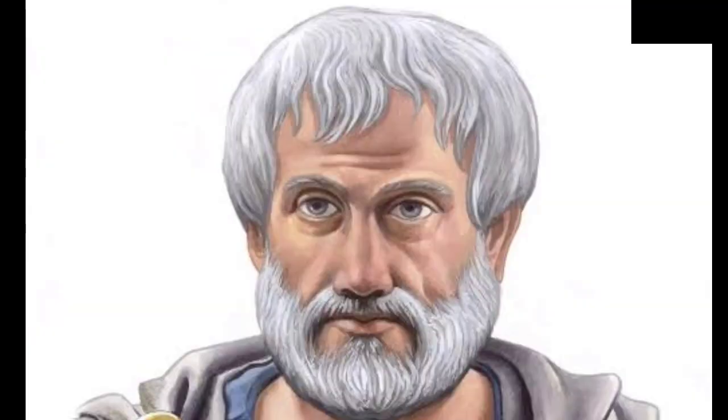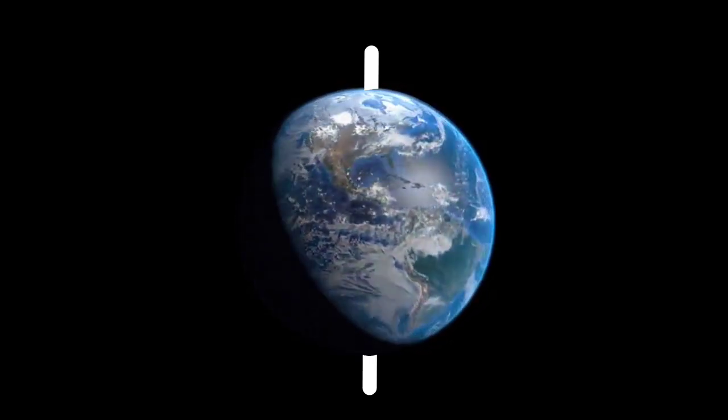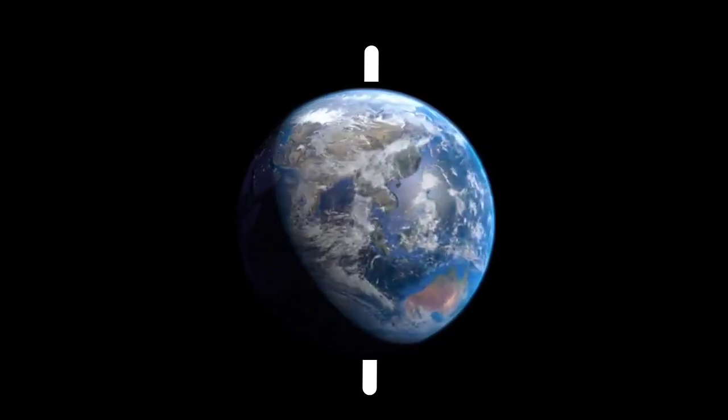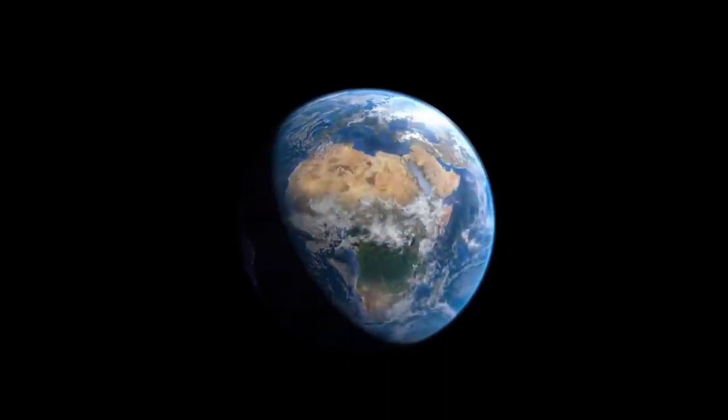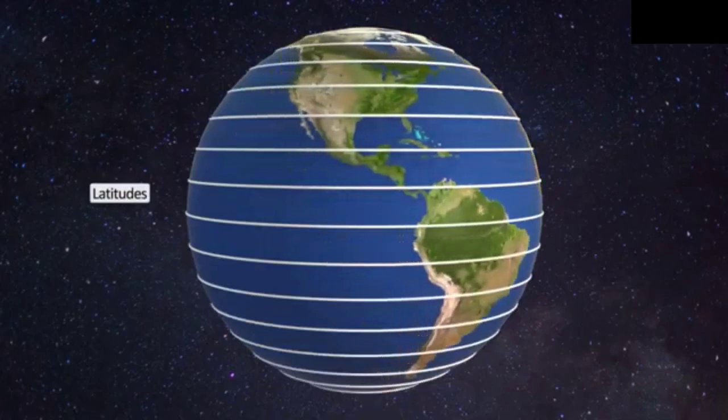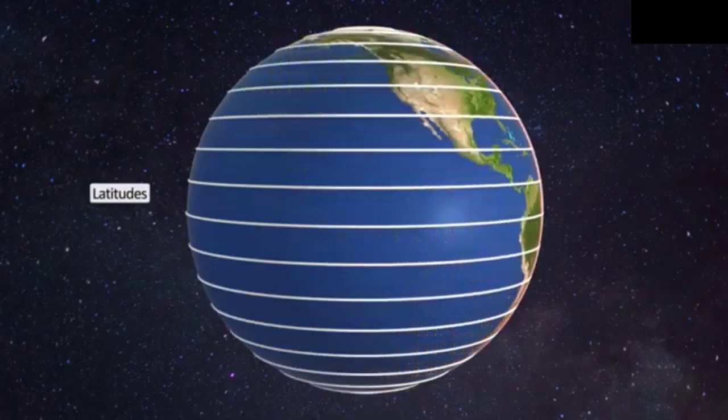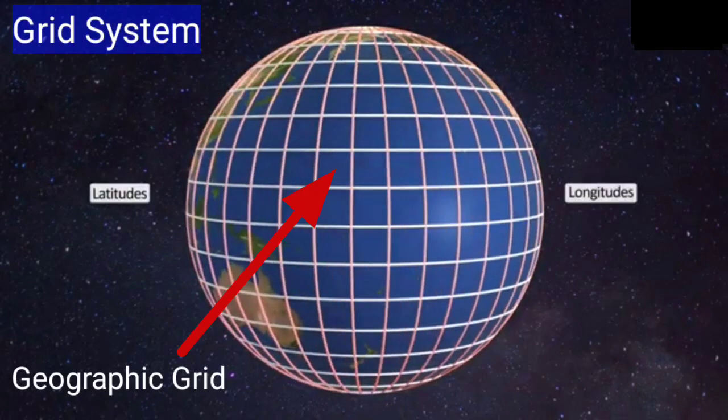These two sets of lines were first proposed by Eratosthenes in the third century. The earth rotates on an imaginary line running from north pole to south pole, known as the axis. This led to the development of horizontal lines termed as latitudes and vertical lines termed as longitudes. When these lines are drawn, they intersect with each other forming a grid system known as geographic grid or graticules, which are very helpful for locating places.